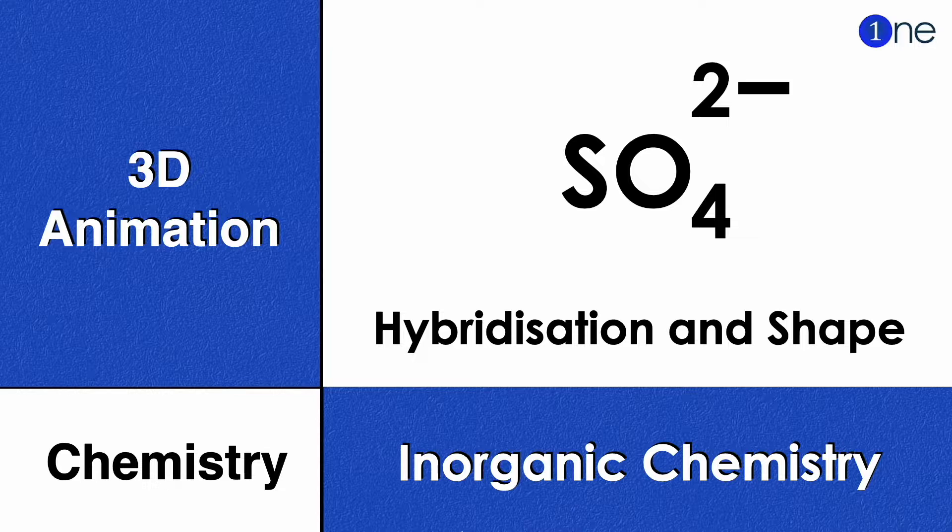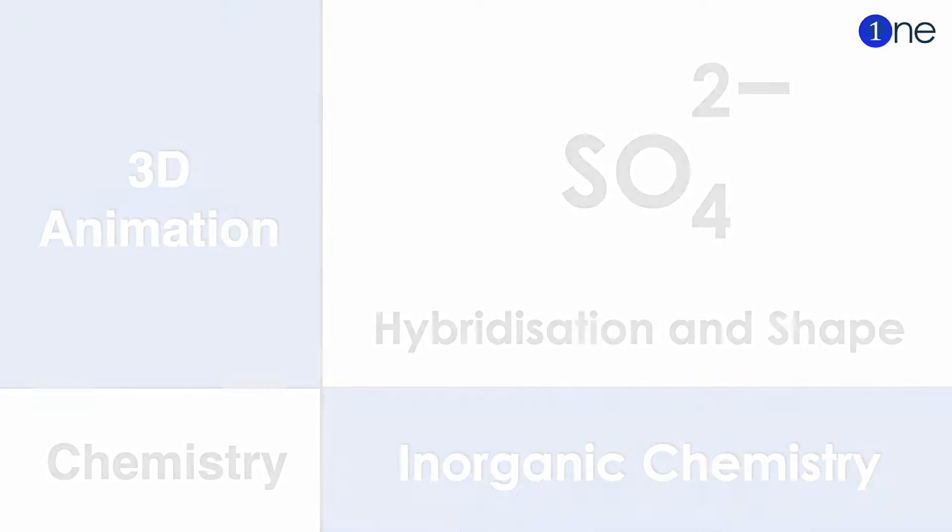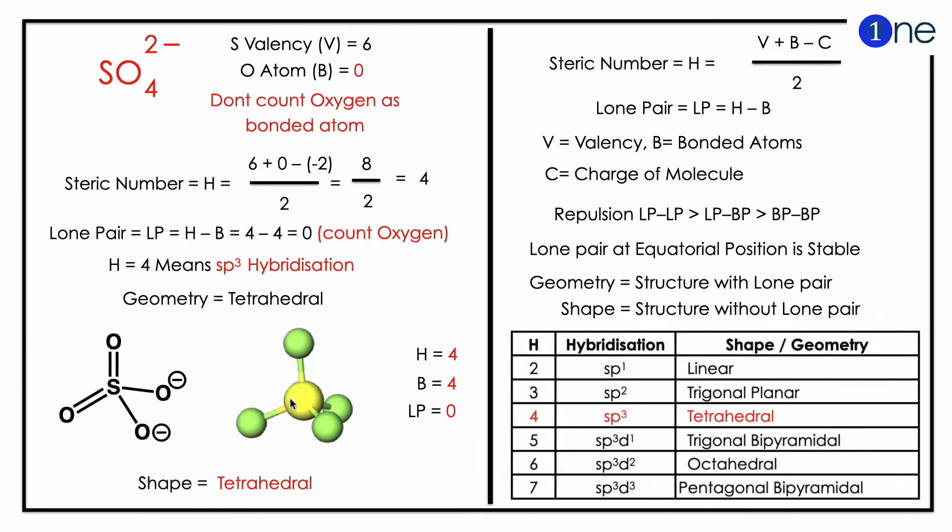Welcome to one inorganic chemistry. Here we are going to find hybridization and shape of sulfate anion with the help of 3D animation. To find the hybridization, you should know the steric number, which is H equals V plus B minus C, whole divided by 2.